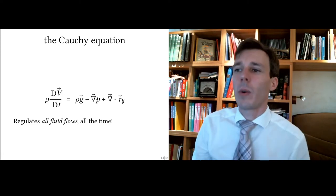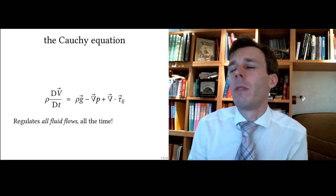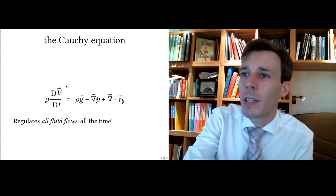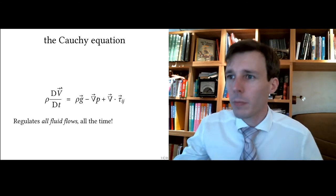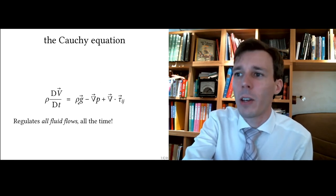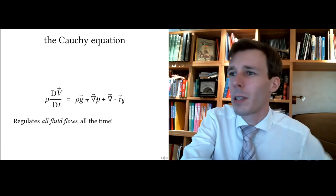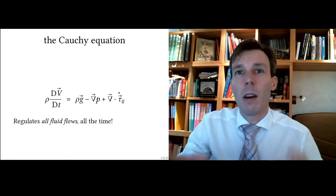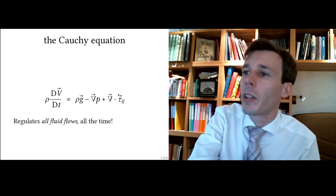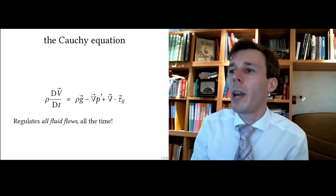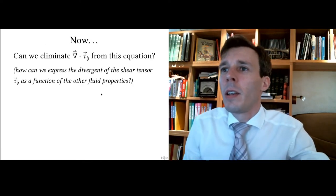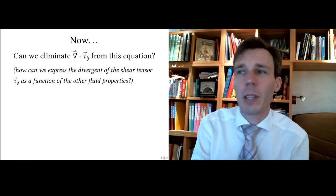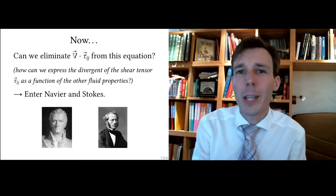Every fluid flow you can conceptualize obeys this equation. However, it is not immediately useful, because we want to solve for the velocity vector field V. On the other side we have gravity (known), pressure (a field that changes with the flow), and the shear tensor (also a field). We don't have equations for them, so we need to eliminate them — especially the divergence of the shear tensor.